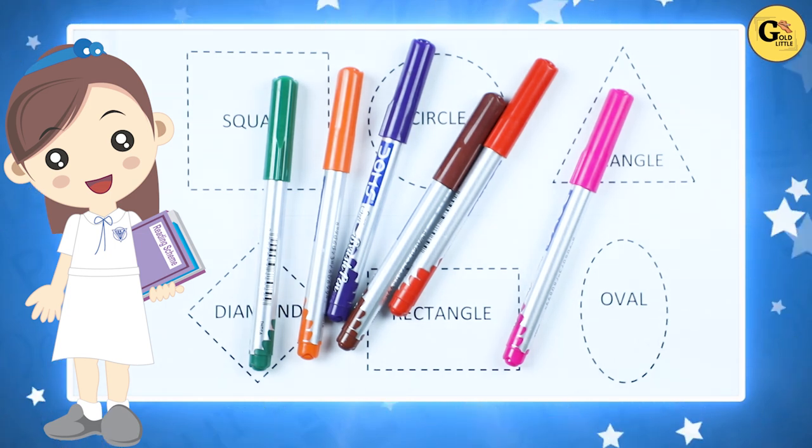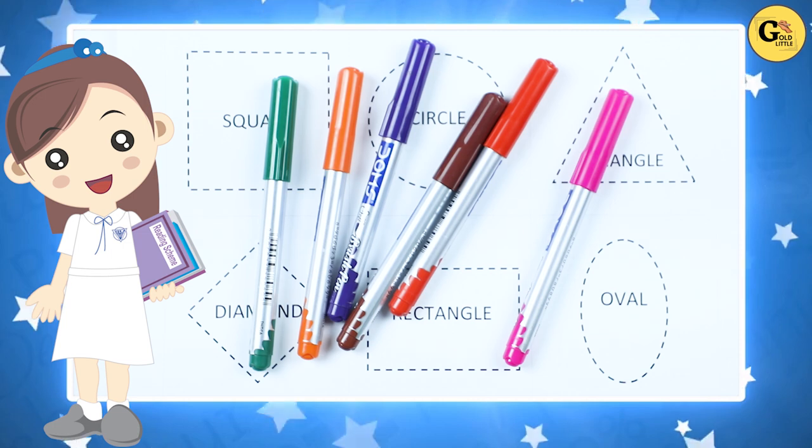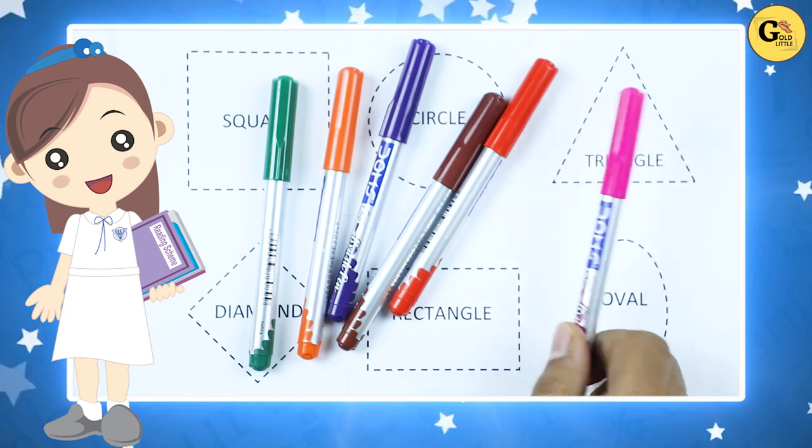Square, circle, triangle, diamond, rectangle, oval. We learn shapes with some colors.